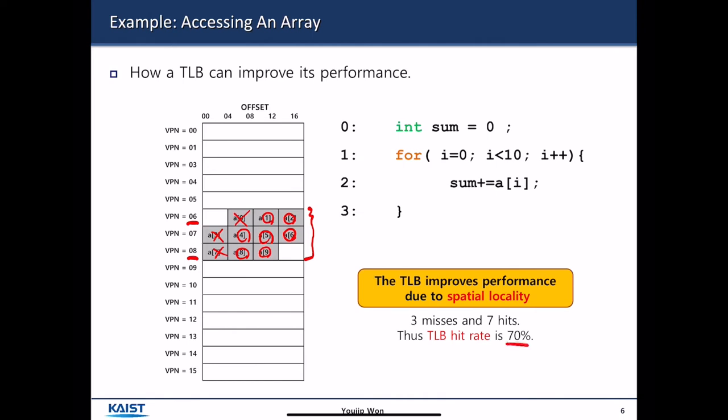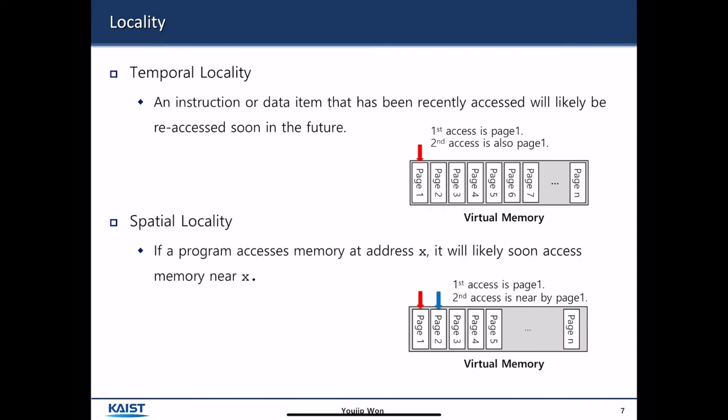The TLB hit rate is 70%. In reality, the TLB hit rate is much, much higher than this. TLB works because programs show some sort of locality. There are two types of locality: temporal locality and spatial locality. Temporal locality means that an instruction or data item that has been recently accessed will likely be accessed again soon. Spatial locality denotes the phenomenon that if a program accesses memory address x, then nearby addresses will be accessed soon.